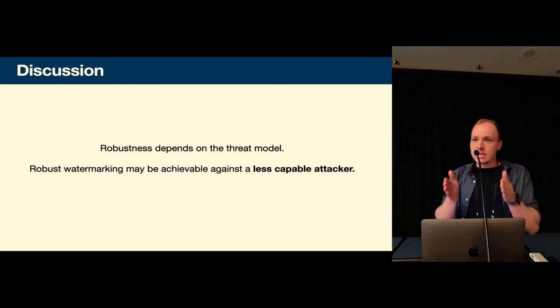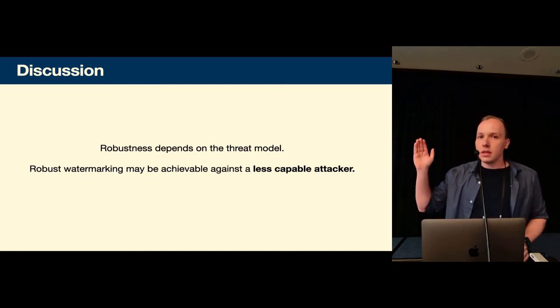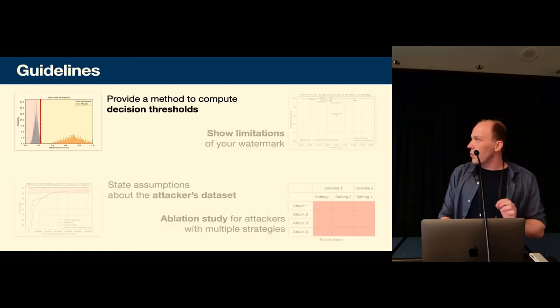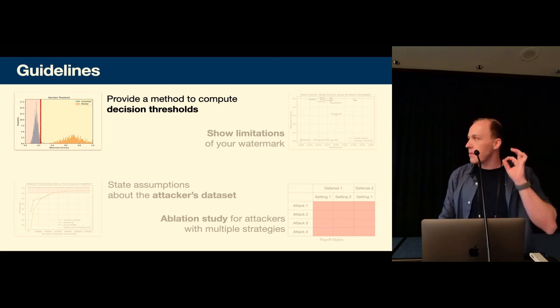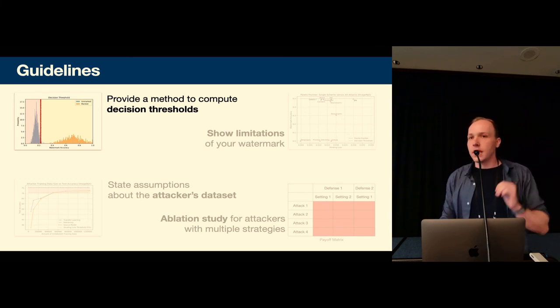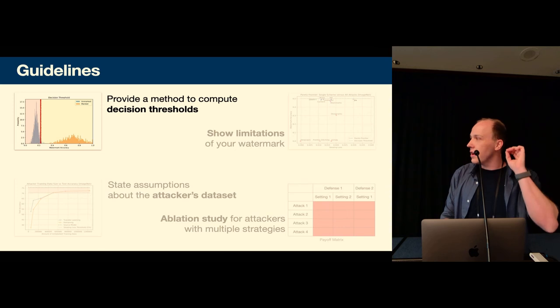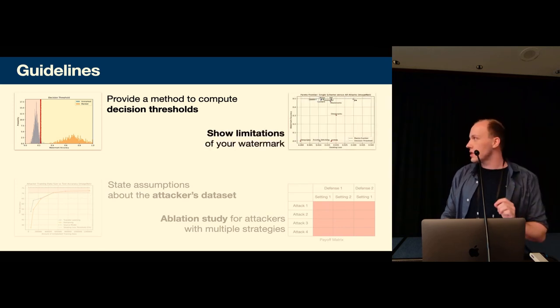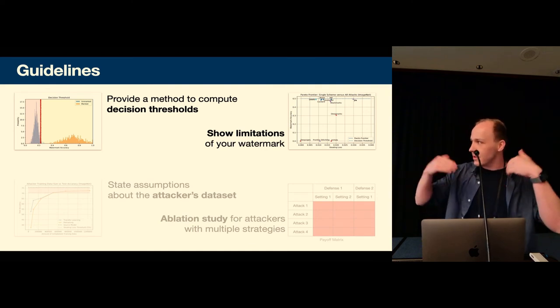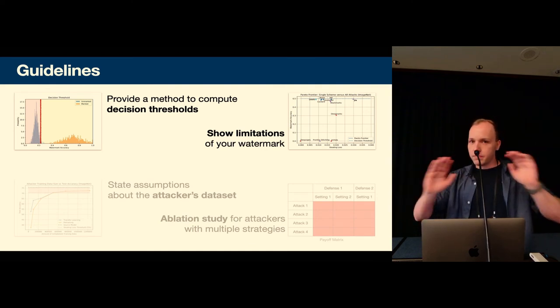So we have four guidelines now in this presentation, in the paper there's some more so check that out if you want more details. So the first one is always derive a method to compute the decision threshold. That is a major component of claiming robustness is to exactly specify what the decision threshold is. Second show limitations of your watermark, break it, like assume a very strong attacker and break the watermark to show the limitations.